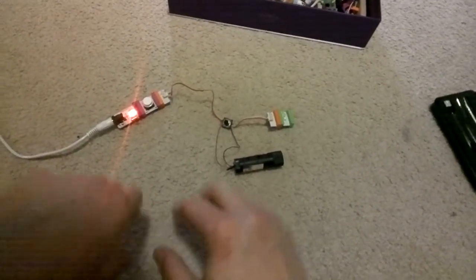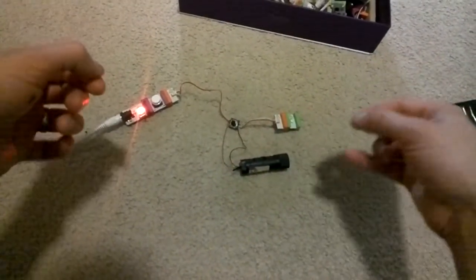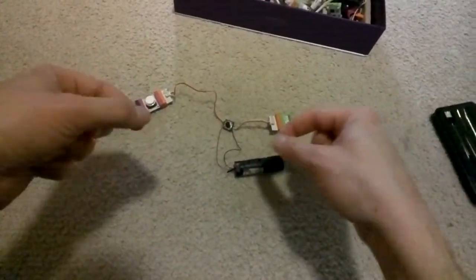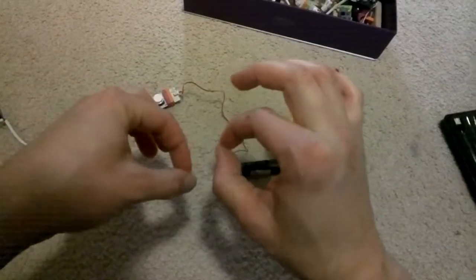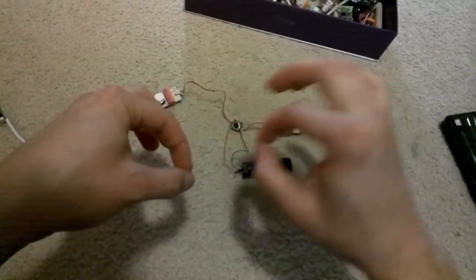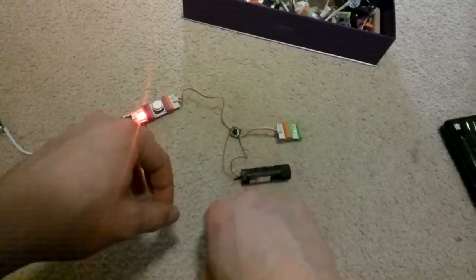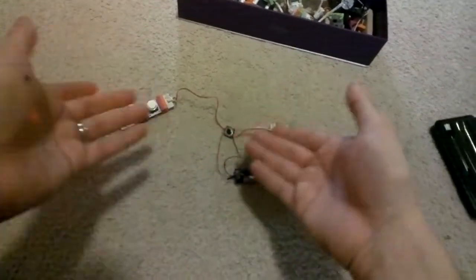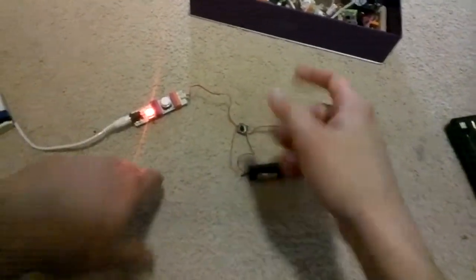So the first module would just be the pass-through with the button with basically two prongs where you can put little screws and attach two wires so that you can make a switch for, say, a laser.